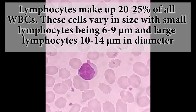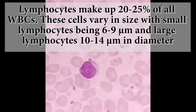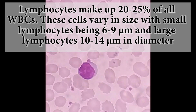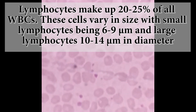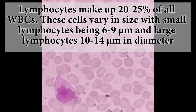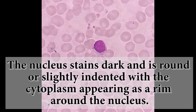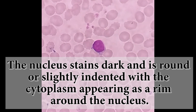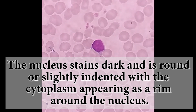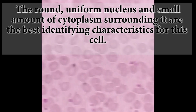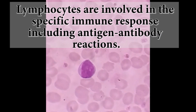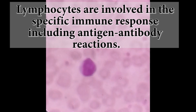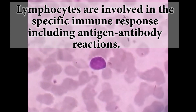Here you can see those are lymphocytes. Lymphocytes make up 20-25% of all white blood cells. These cells vary in size, with small lymphocytes being 6-9 micrometers and large lymphocytes 10-14 micrometers in diameter. The nucleus is stained dark and is round or slightly indented, with the cytoplasm appearing as a rim around the nucleus. The round uniform nucleus and small amount of cytoplasm surrounding it are the best identifying characteristics for this cell. Lymphocytes are involved in specific immune responses, including antigen-antibody reactions.